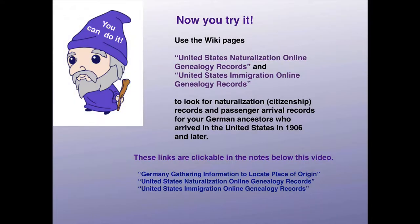Now you try it. If your ancestors arrived in 1906 or later, search for their naturalization records by using the page United States Naturalization Online Genealogy Records. And regardless of when they arrived, try to find them in passenger lists by using United States Immigration Online Genealogy Records. The links referred to in this article will be listed in the notes below this video.